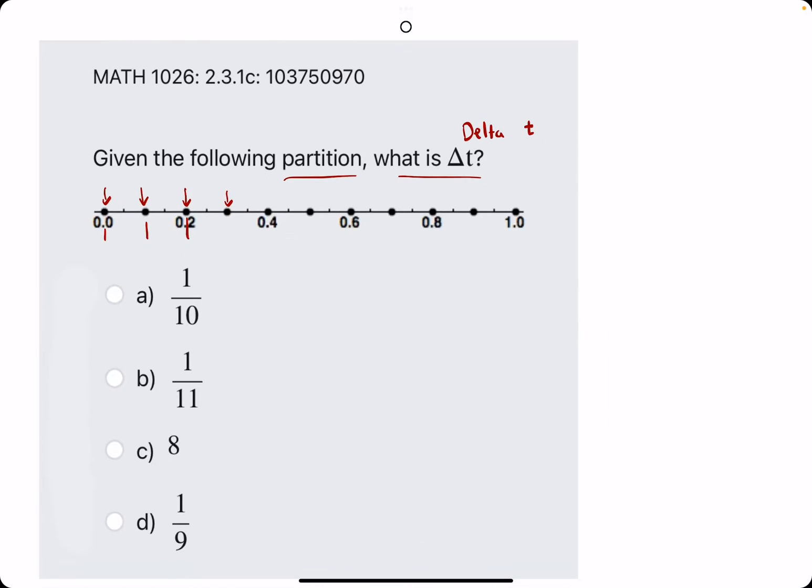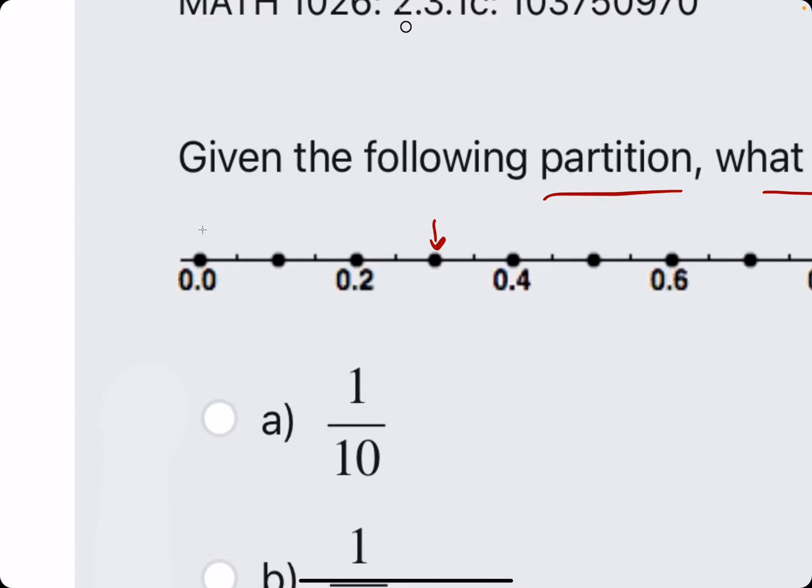In some versions of this problem we can tell pretty easily what the difference is just by looking at two adjacent points. So two points next to each other. So when we look at zero here and point two here...